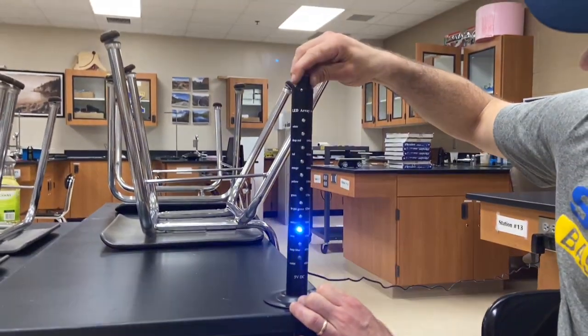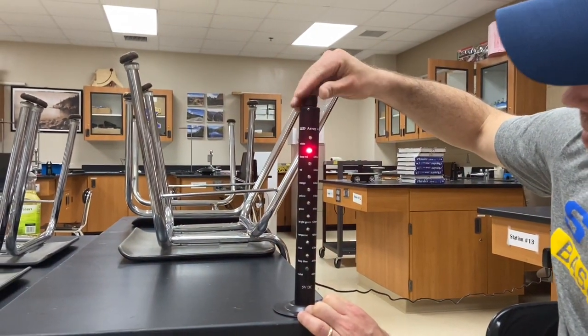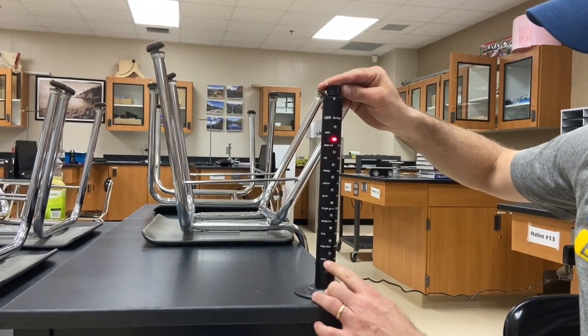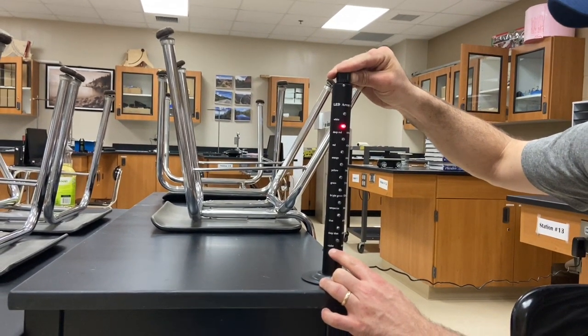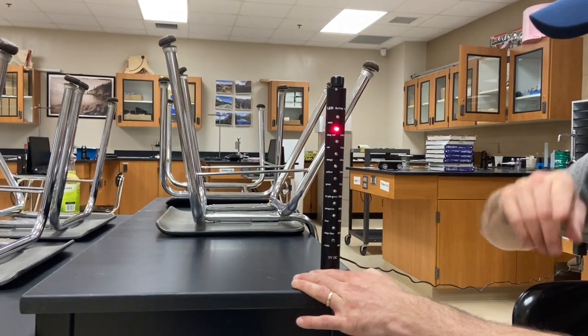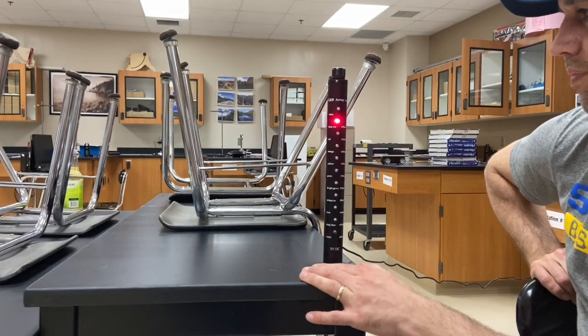So red is the very edge of what we can see at about 700 nanometers on one end, and then violet is the very edge of what we can see at about 400 nanometers on the other end. But there are lots and lots of different wavelengths of light that we can't see.